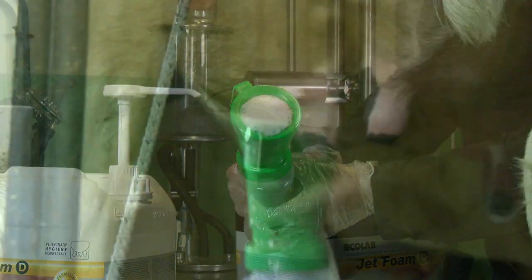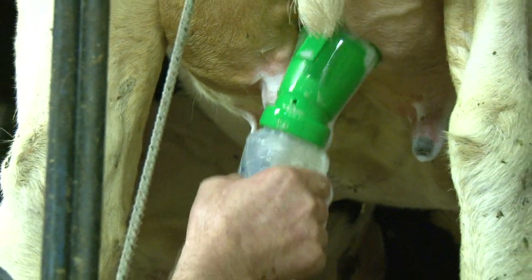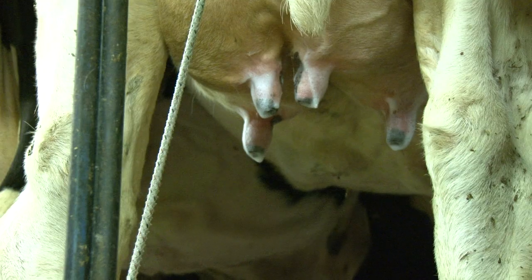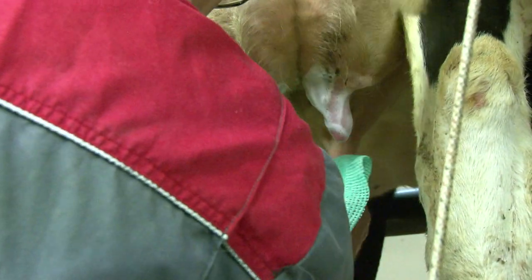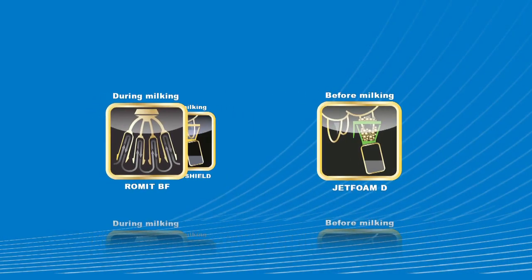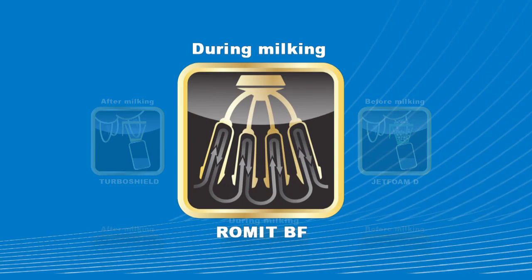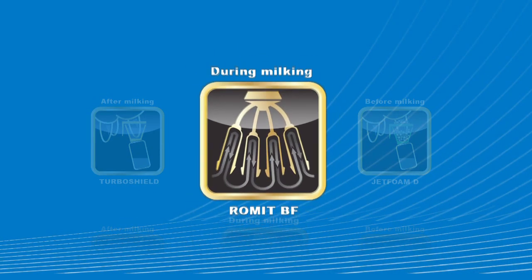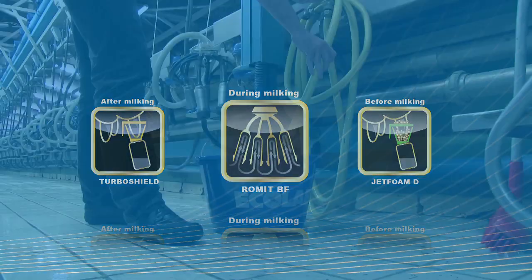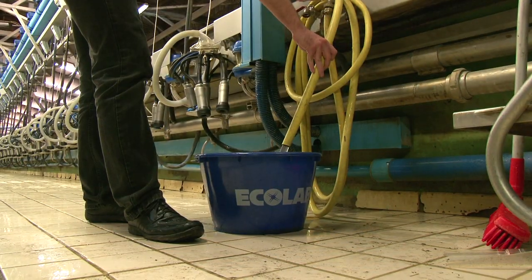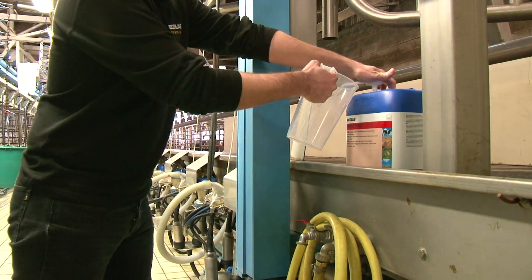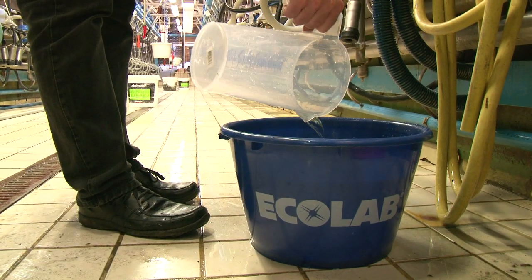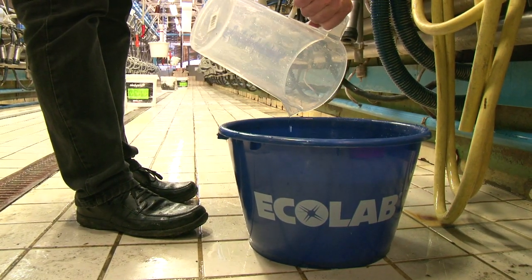The second action of Jet Foam is disinfection. Jet Foam is highly effective within 15 seconds of application. It prevents cross-contamination between cows during milking.